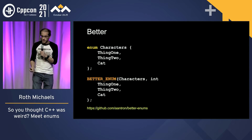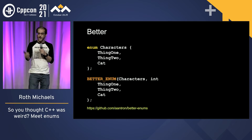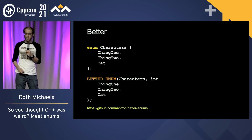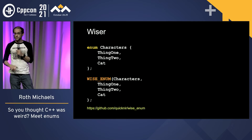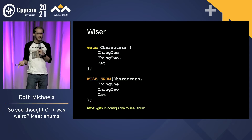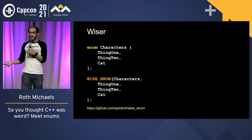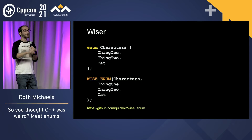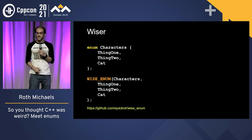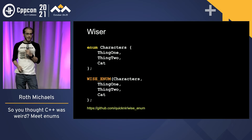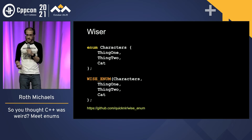Instead, do better. Use a library like betterenum, which will give you string conversion, counts, and all that fancy stuff. Or if you want to be super wise, use wiseenum — although last time I checked about a year ago it didn't work on MSVC. The developer would really like help from someone with an MSVC compiler to get that working. Maybe I'll try it next week when we switch to 2019 at work.